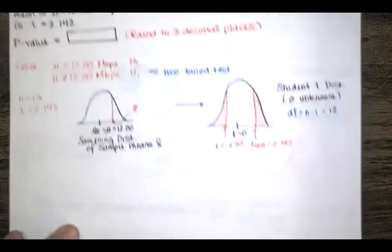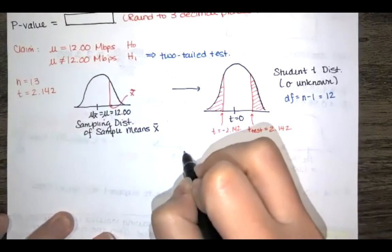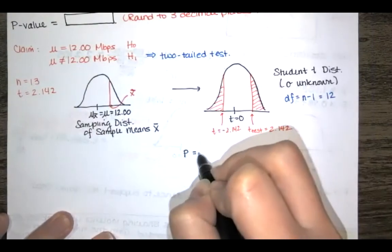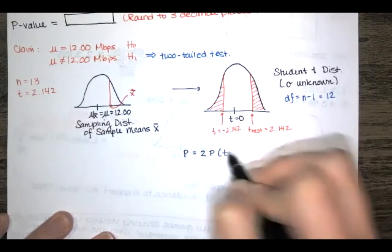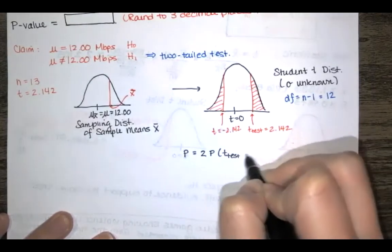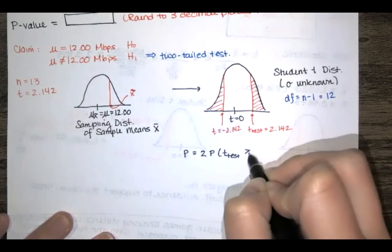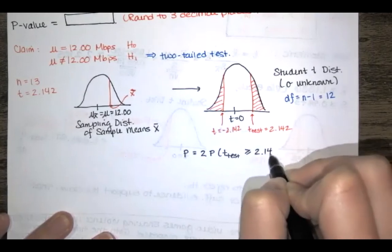Okay so the p-value is equal to this. It's going to be two times the probability that our test statistic t is greater than it's really greater than or equal to 2.142.